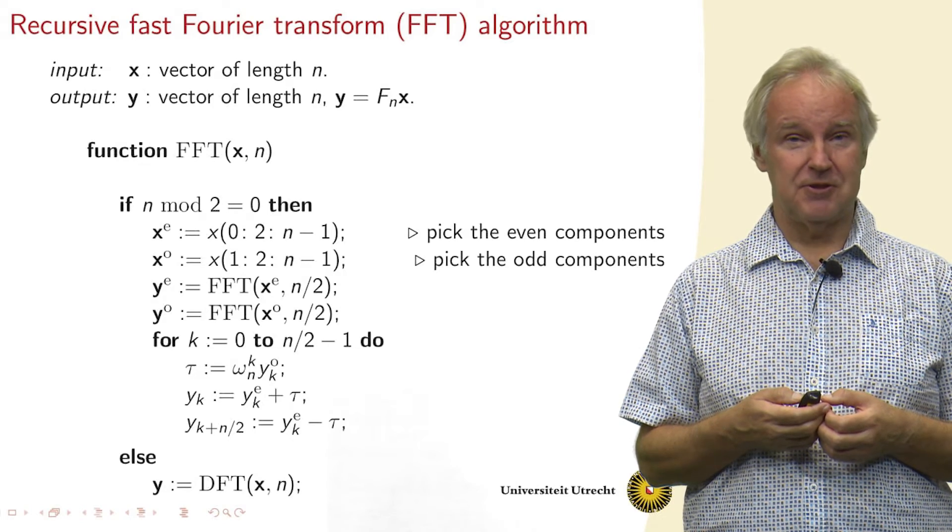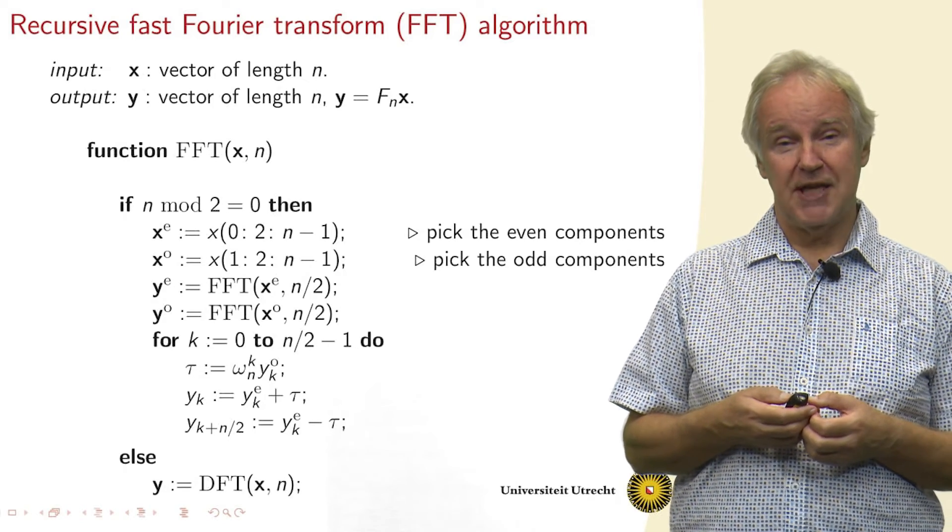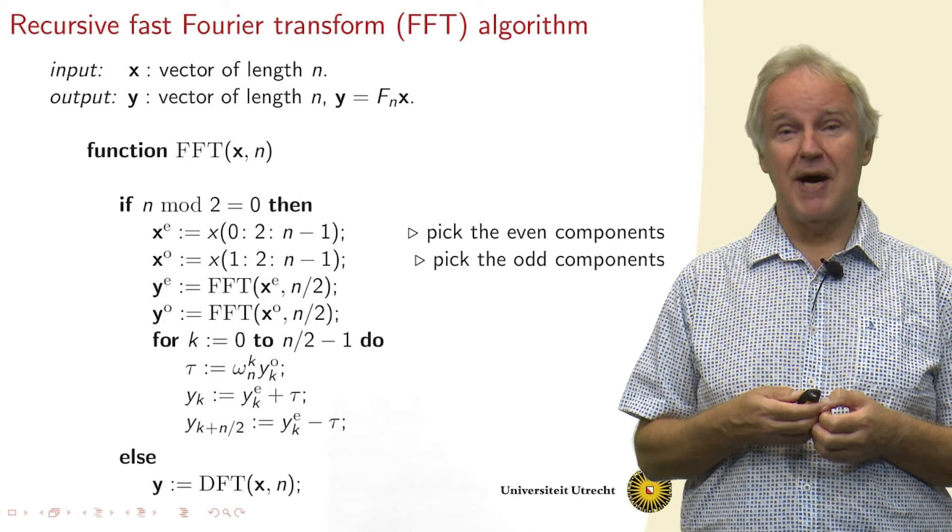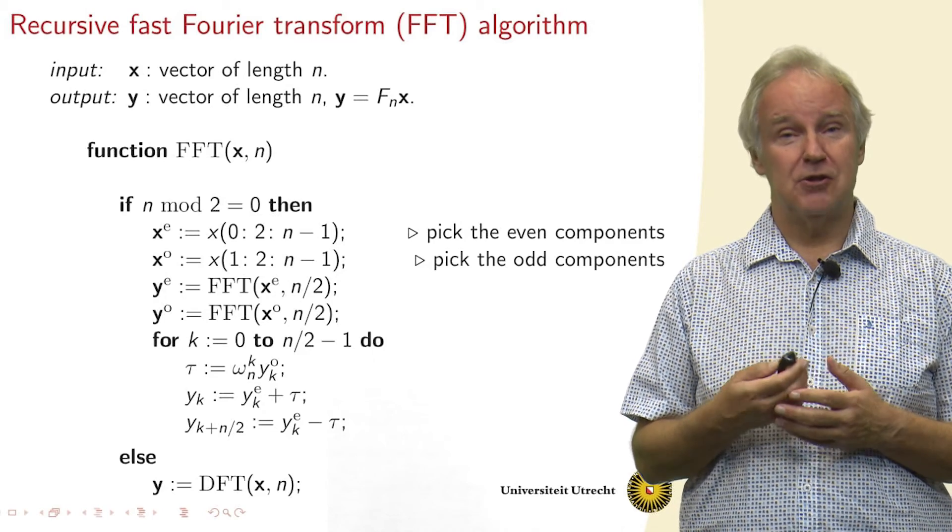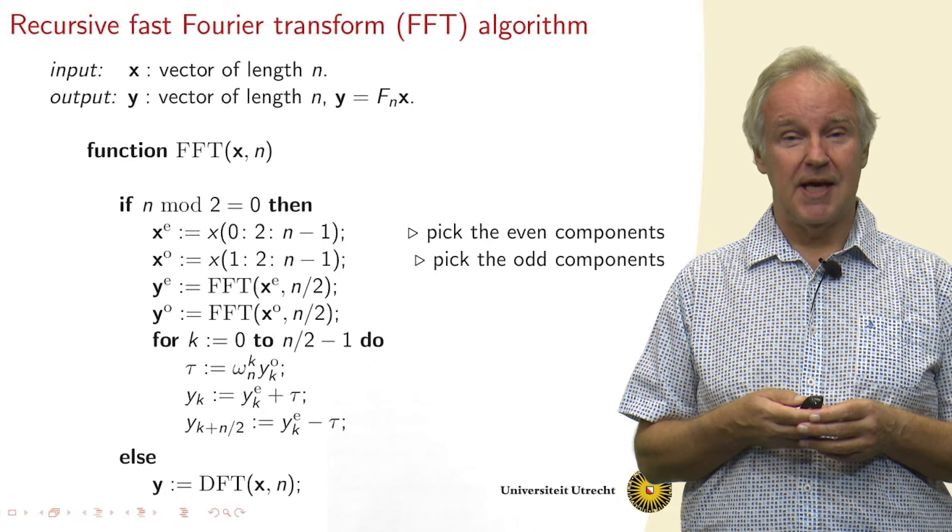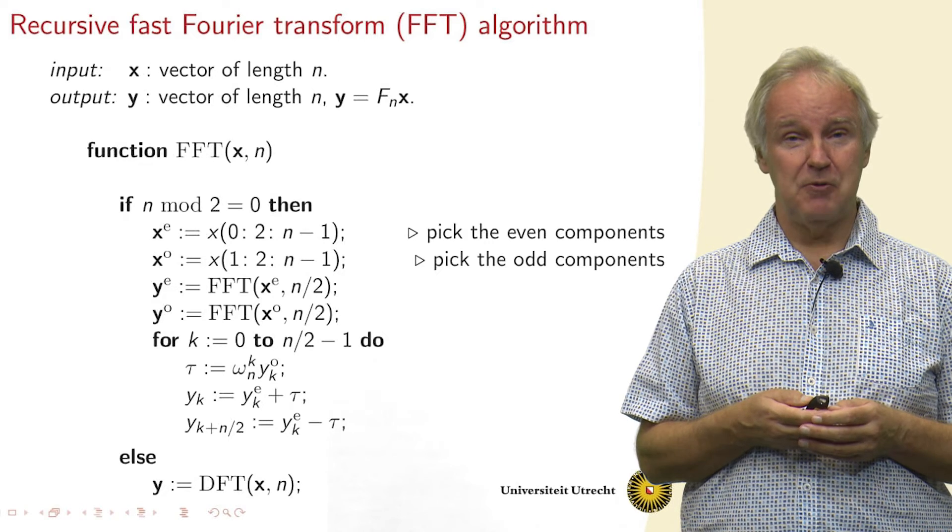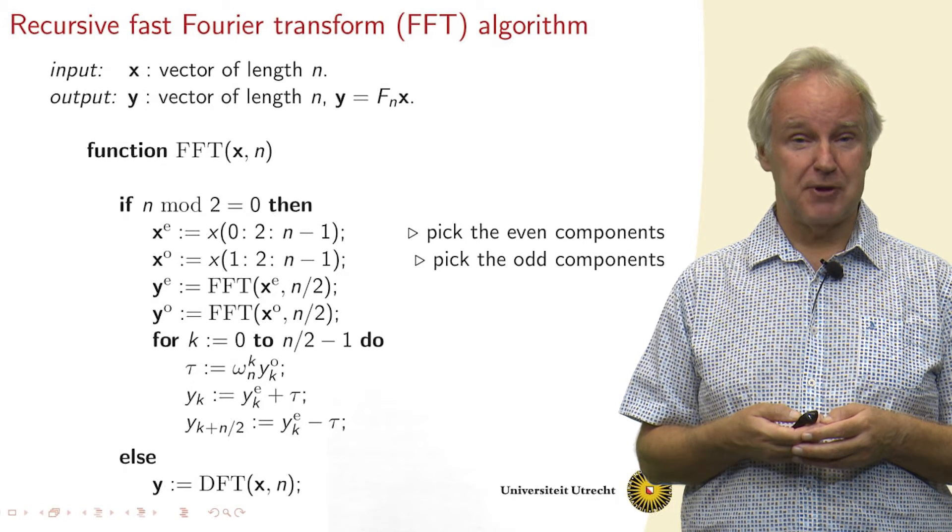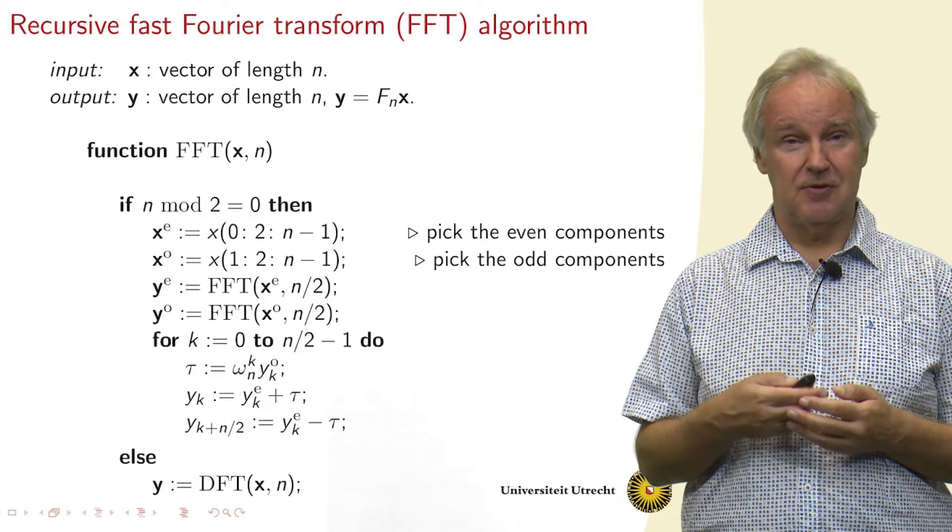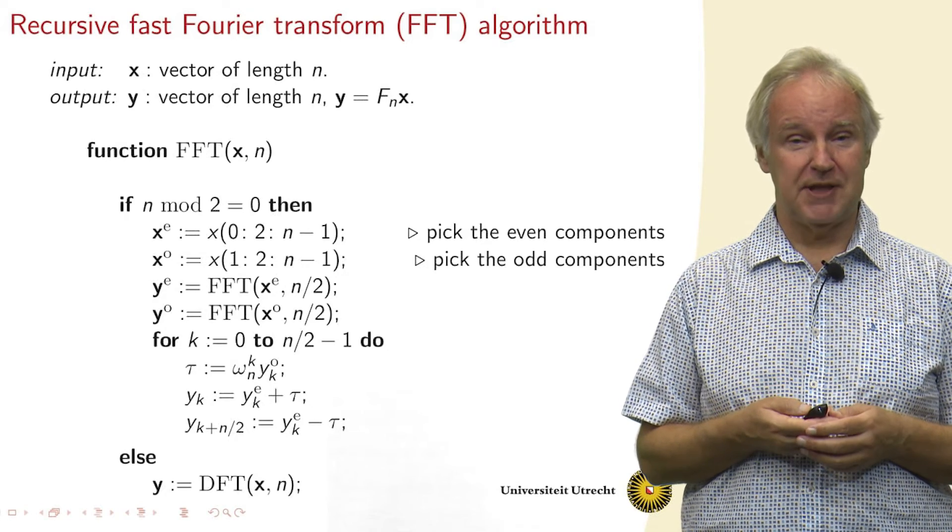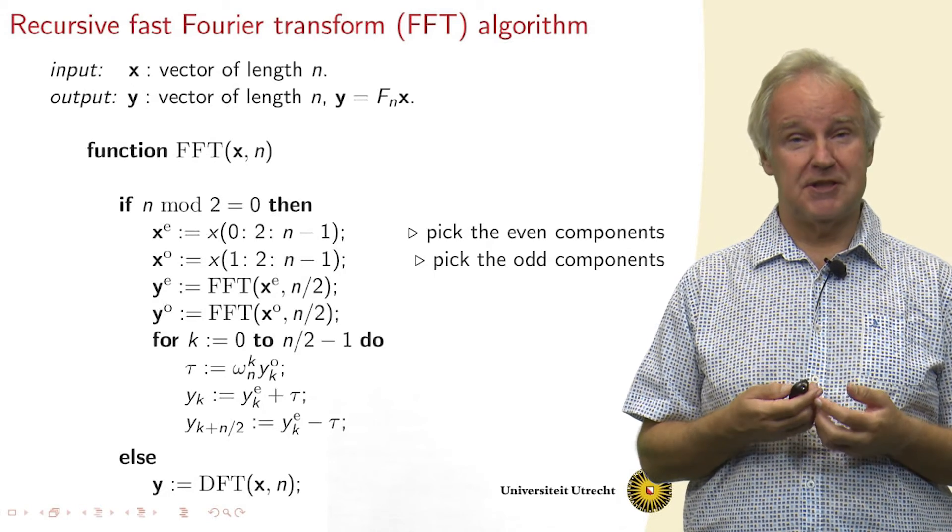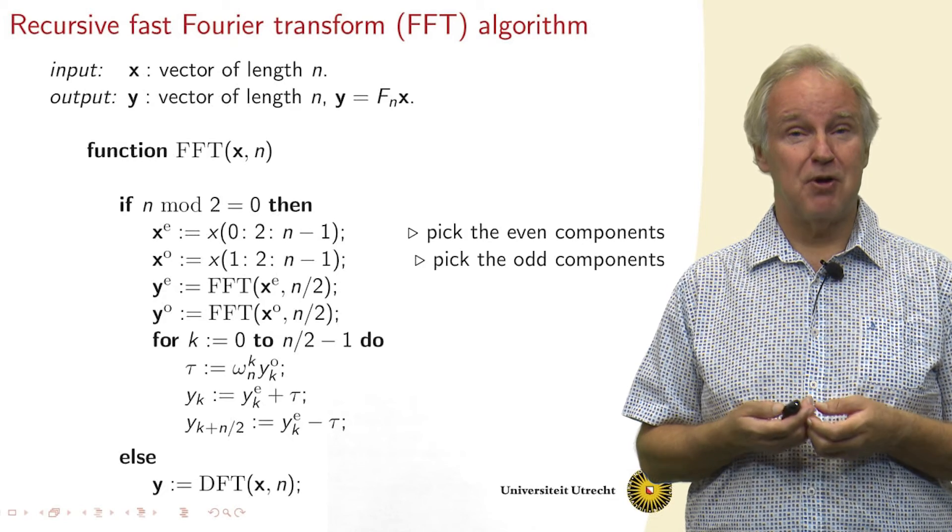Then we combine the results, and we do that in a loop, because each time we take the kth component of y_o, the odd part, multiply it by omega_n to the power k, and then we call this number tau, and we either add or subtract it from the even component y_k^e. So this is the whole algorithm. And you see that it is recursive, because it calls itself with a smaller size.